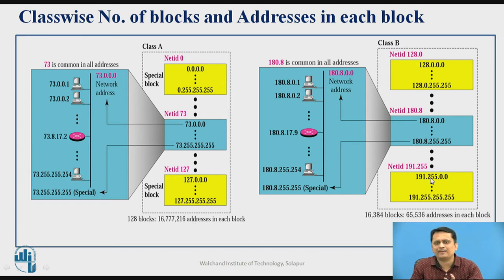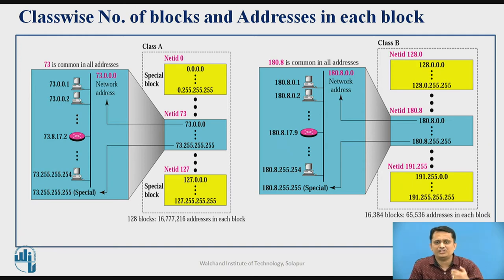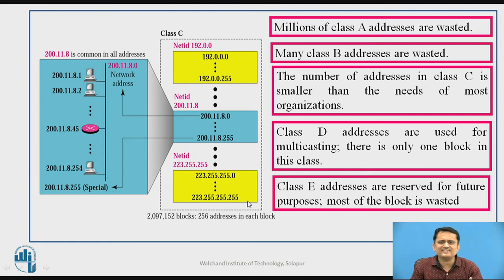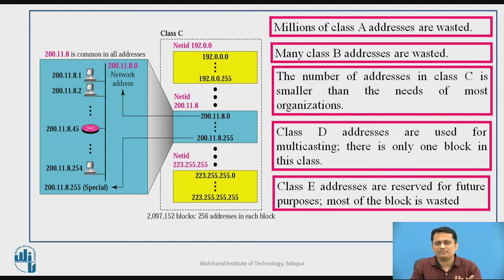In class B the network ID increases, meaning the number of networks goes on increasing and the number of hosts per network is slightly less than class A — you can have blocks with around 65,536 addresses each. In class C you can have 2 raised to 24 different networks but within a network only 2 raised to 8 different hosts, so 256 addresses are possible. Millions of addresses are wasted in class A, many are wasted in class B, and in class C the addresses are smaller than the need for most organizations.